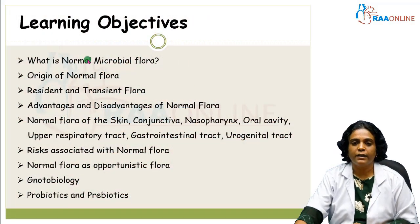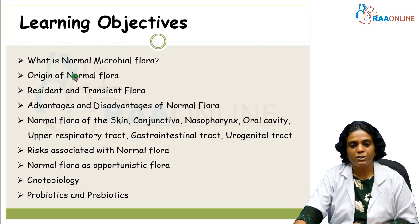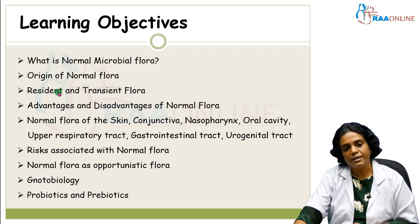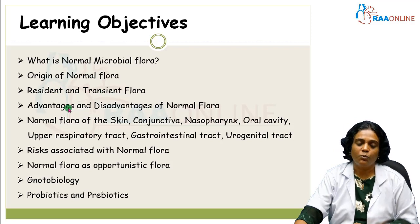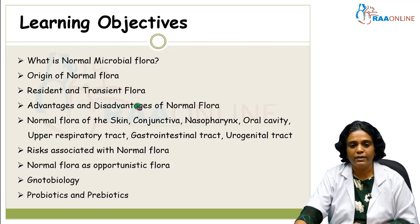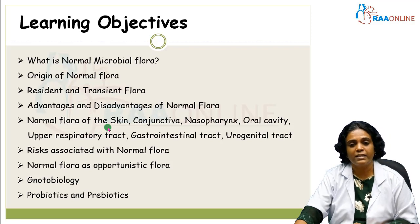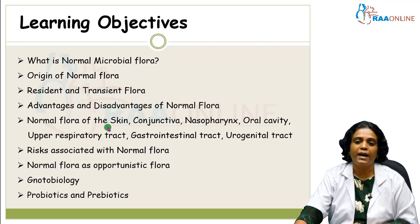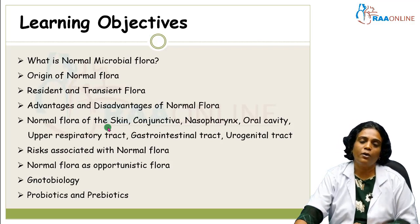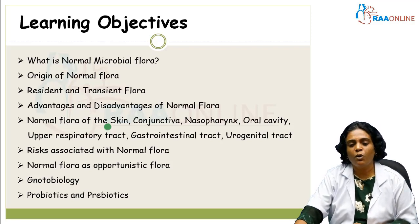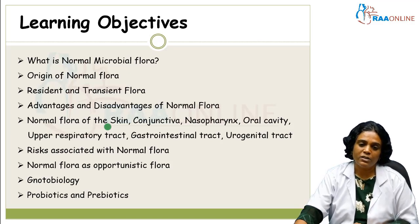The learning objectives in this lecture would be: what is the normal microbial flora and how does it originate, what is the residential flora and the transient flora, what are the advantages and disadvantages of a normal flora, and we will be looking into the normal flora of various sites like skin, conjunctiva, nasopharynx, oral cavity, respiratory tract, gastrointestinal tract, and urogenital tract. We will also look into the risks associated with this normal flora, how normal flora can become an opportunistic flora, and a few points about notobiology, probiotics, and prebiotics.